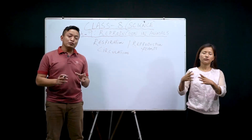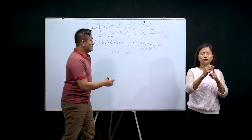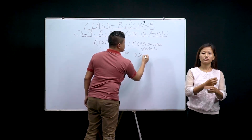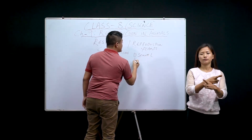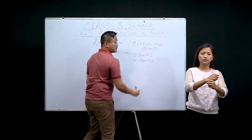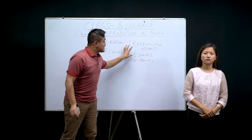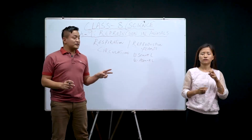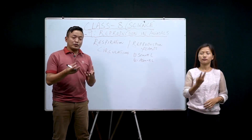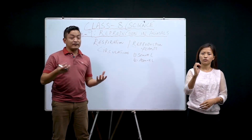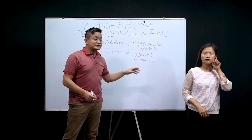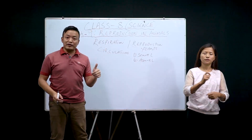In plants, there are two modes of reproduction: sexual reproduction and asexual reproduction. In sexual reproduction in plants, we have two reproductive organs — a male part and a female part. Asexual means only one parent.